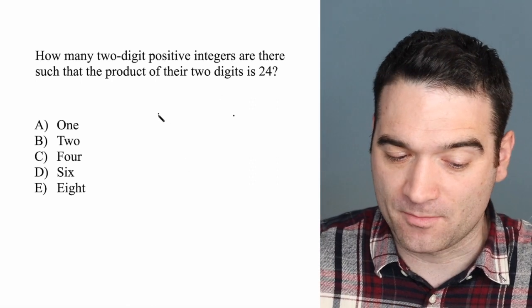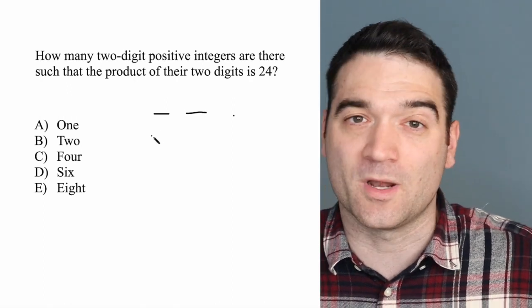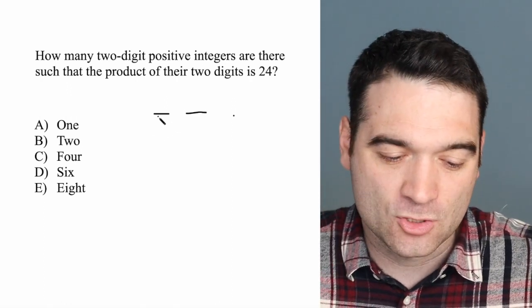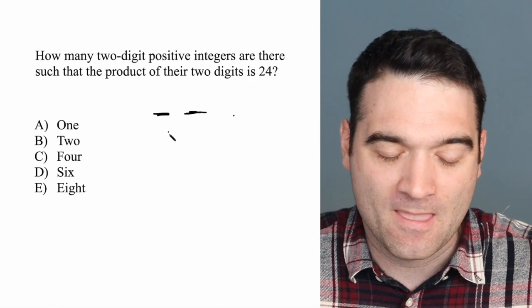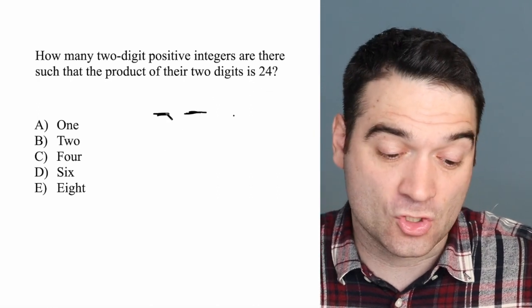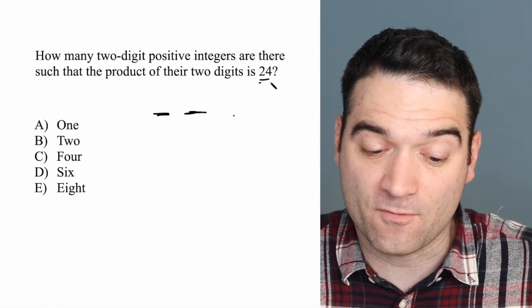So two-digit number means a number like 37 or 28 or 15, right? Two digits. And we want these two digits to multiply to 24.